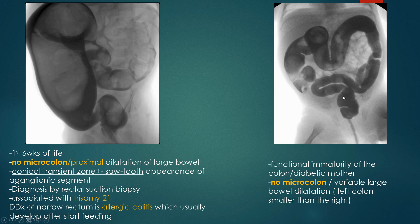In the case of meconium plug, the colon is dilated and contains fecal matter appearing as filling defects. There is no transition zone and the rectosigmoid ratio is preserved — we can see how the rectum is dilated compared with the sigmoid. The contrast enema is usually therapeutic in these cases.